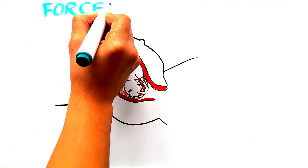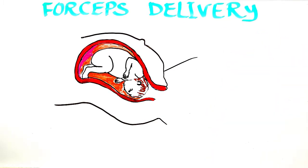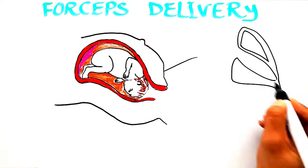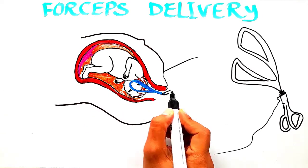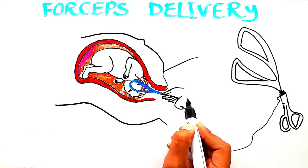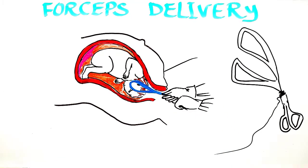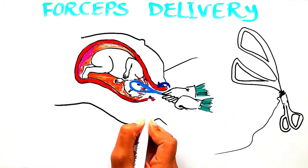The fourth baby childbirth option is forceps delivery. Forceps delivery is used during the course of vaginal birth. In these cases, a doctor makes use of forceps and inserts them slowly in the birth canal, then uses them to gently grab the baby's head and guide it outwards through the canal.